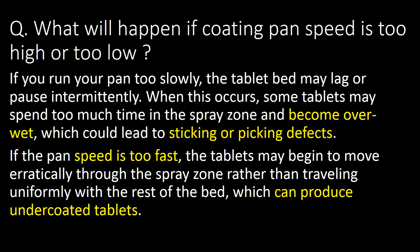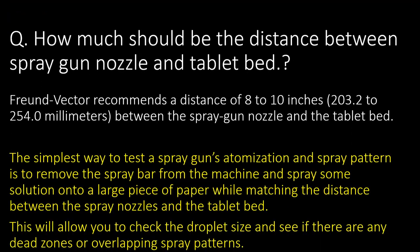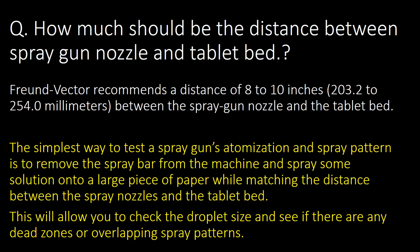How much should the distance be between the spray gun nozzle and the tablet bed? As per Freund Vector recommendation, a distance of 8 to 10 inches is recommended. The simplest way to test spray gun atomization and spray pattern is to remove the spray bar from the machine and spray solution onto a large piece of paper at the matching distance. This allows you to check droplet size and see if there are any dead zones or overlapping spray patterns.